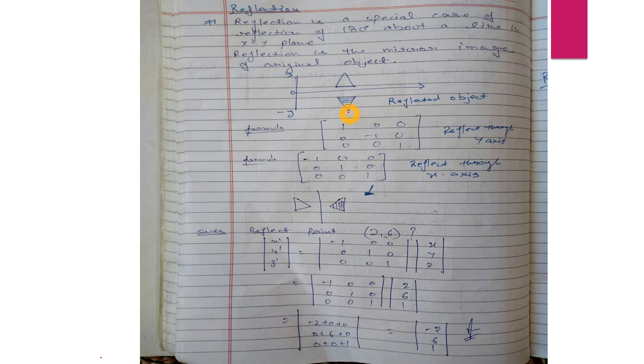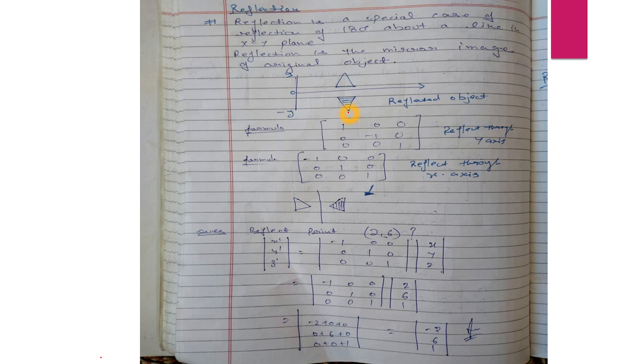One diagram will make it easier. See reflection about the y-axis. There are two types of reflection: one along the x-axis, one along the y-axis. These points, one, two, three—when we reflect them, we will see the reflected image on the axes.